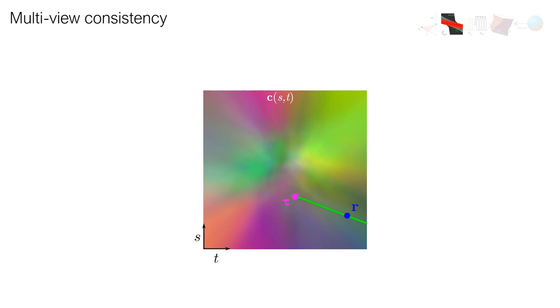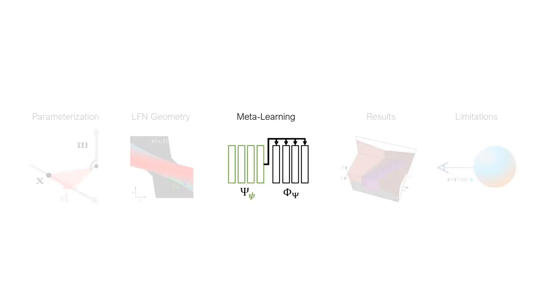In the next section, we explain how we use meta-learning to avoid multiview inconsistency and enable few-shot reconstruction.